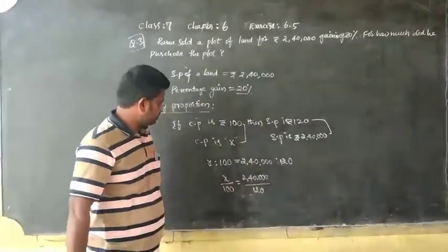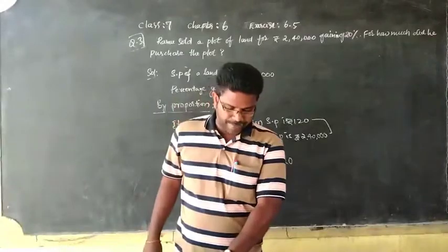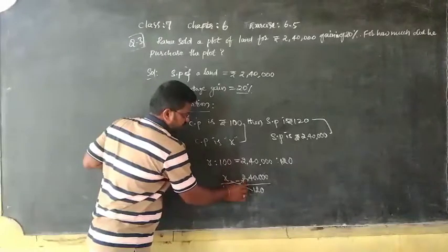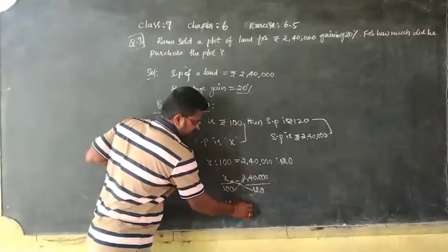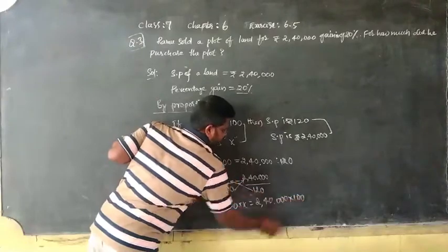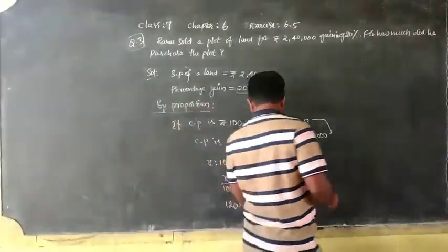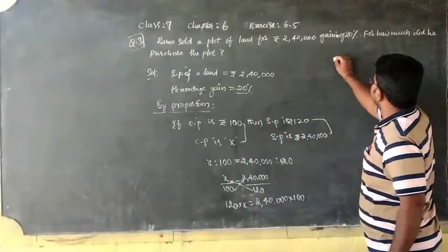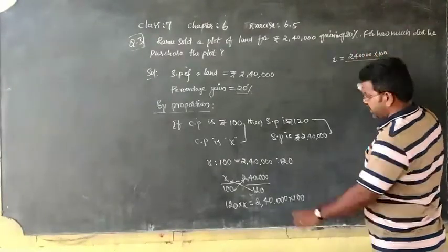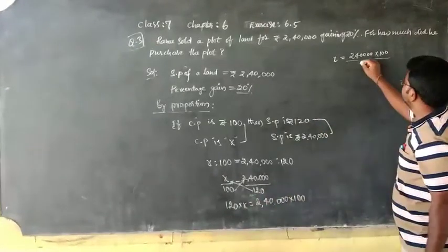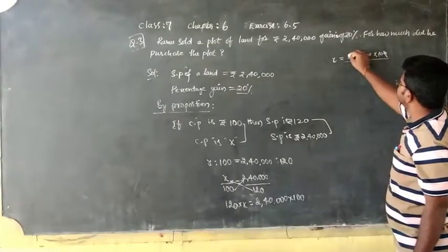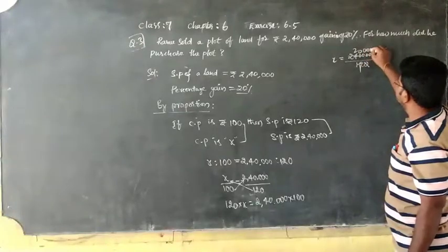Therefore X equals... To find the X we have to do the cross product: 120 into X, that equals 2,40,000 into 100. From this side to that side, X equals 2,40,000 into 100, divided by 120. 12 ones, 12 twos, 20,000. 20,000 into 10, together we get 2 lakh. So what is X?